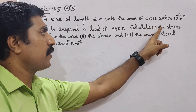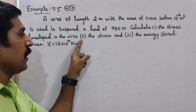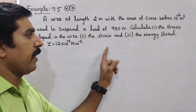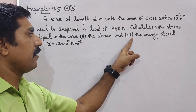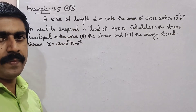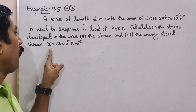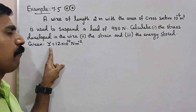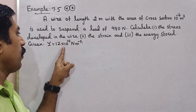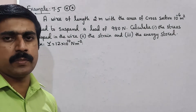Calculate first one, the stress developed in the wire; second one, the strain developed in the wire; and third one, the energy stored in the wire. In the case of the wire, given Y is equal to 12 into 10 power 10 newton meter power minus 2.